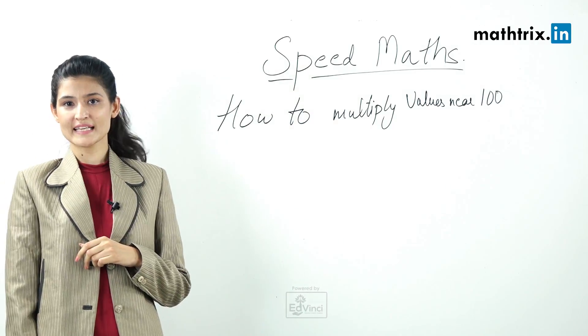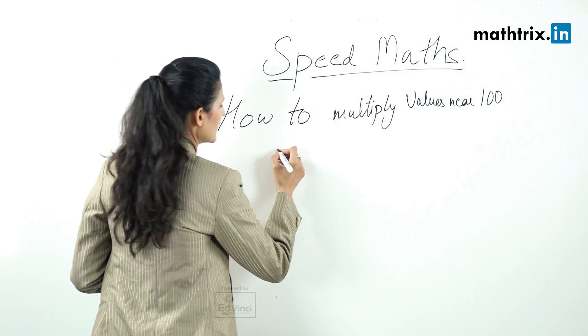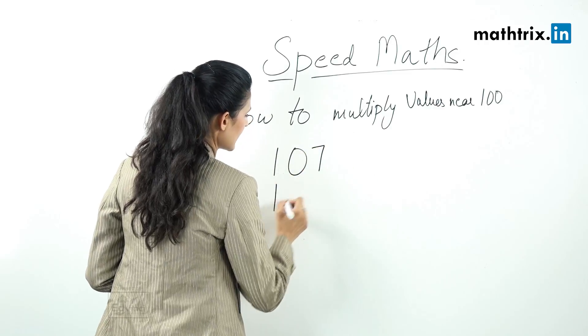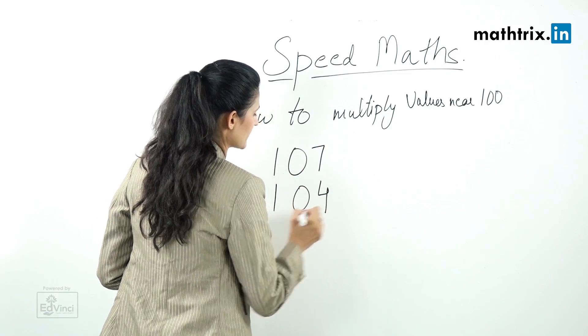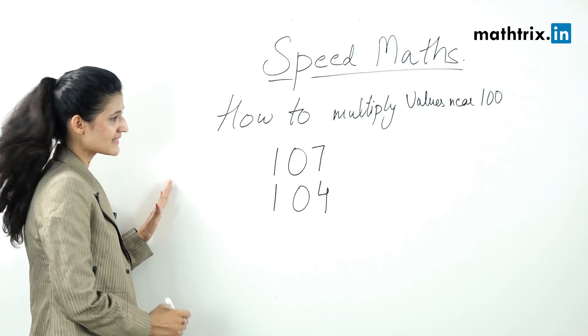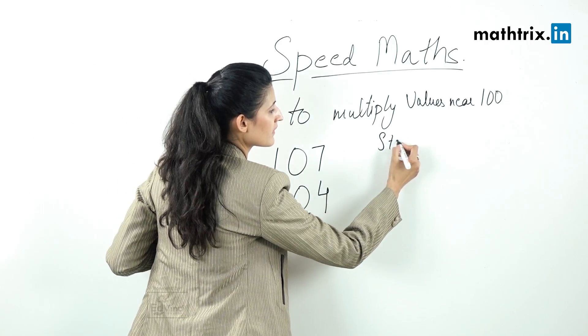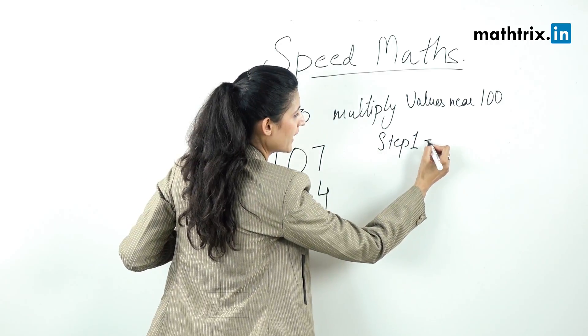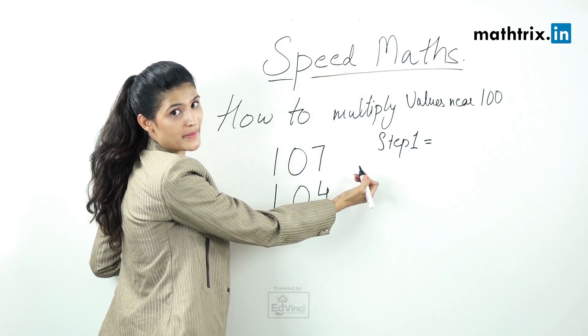So let's take an example: 107 into 104. Step number 1, we always take our base as 100.